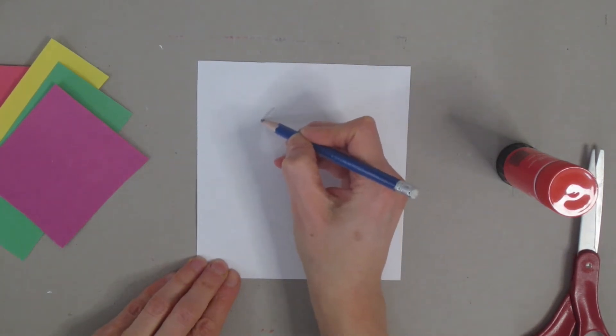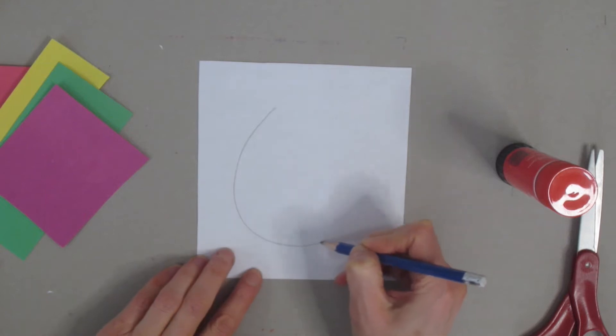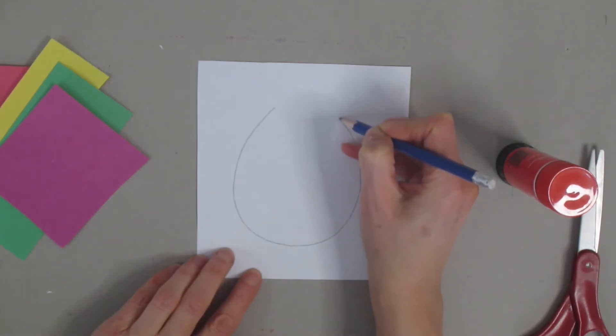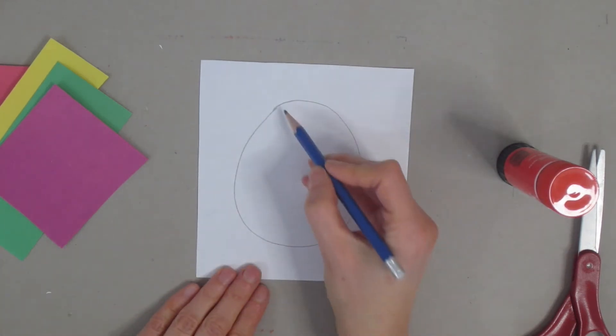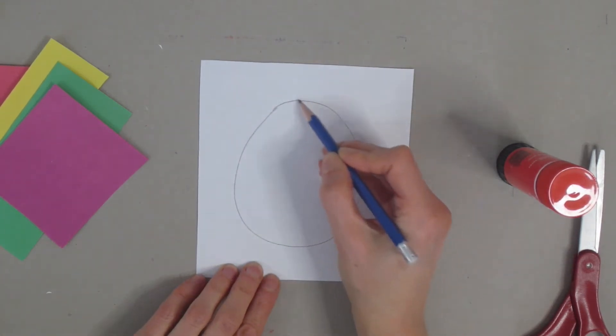So with our pencil we're going to get started. We're going to start and curve around, down, and back up to the other side. So we're just making an egg, almost like an oval shape. Let me just show you one more time: around, down, back up.